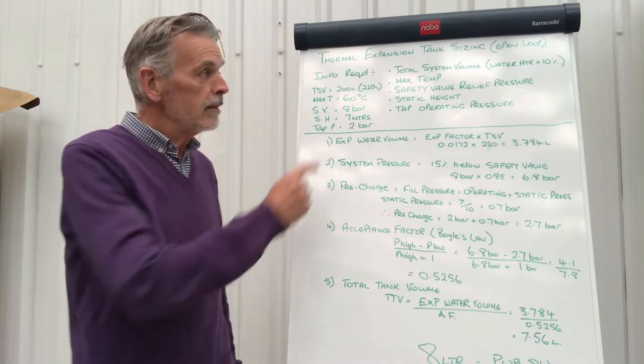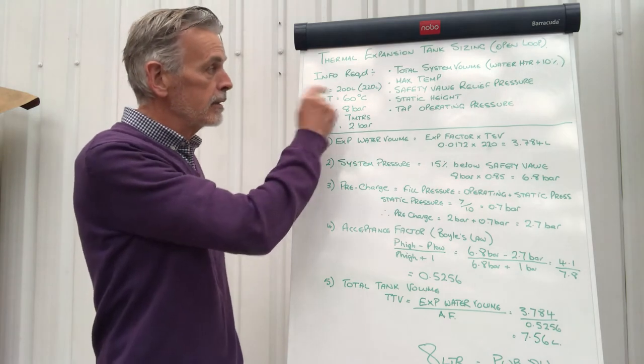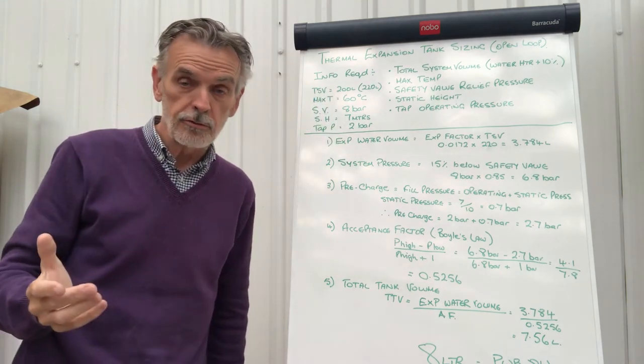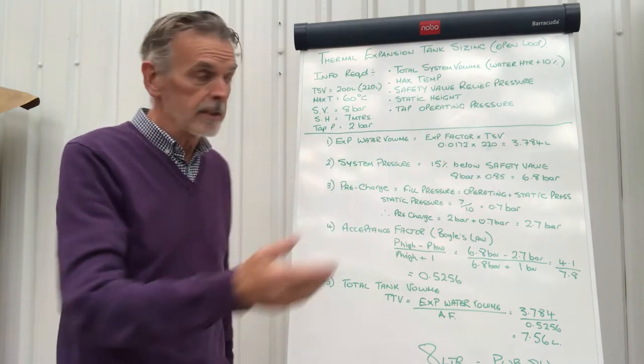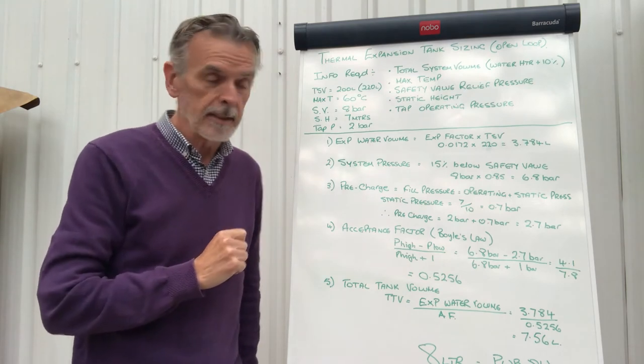So here are some parameters that I'm going to use for this calculation. The total system volume, the calorifier or unvented cylinder is 200 litres, so therefore 200 litres plus 10% equals 220 litres. The maximum temperature is 60 degrees centigrade.